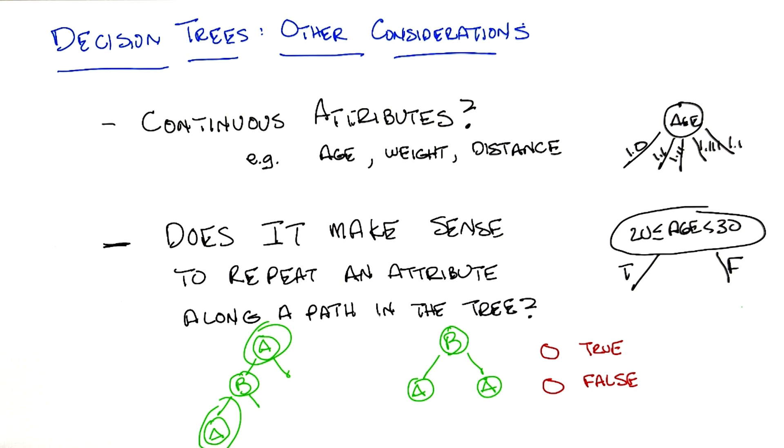So, it seems like it could be no, in that if we're looking at attributes like is A true, then later we wouldn't ask again is A true, because we would already have known the answer to that.